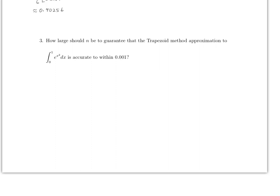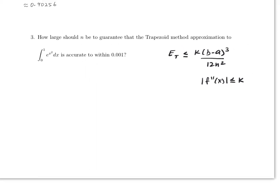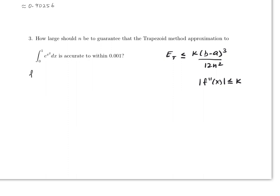Finally, how large should n be so the trapezoid approximation is within 0.001? The trapezoid error formula states: |E_T| ≤ K(b−a)³ / (12n²), valid when |f''(x)| ≤ K. We need to find the second derivative of f(x) = eˣ². The first derivative is f'(x) = 2x·eˣ².